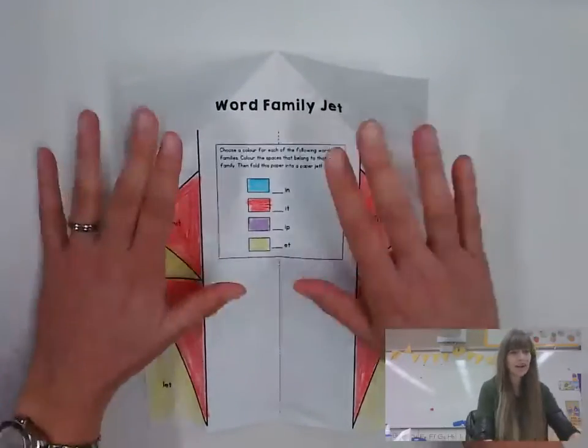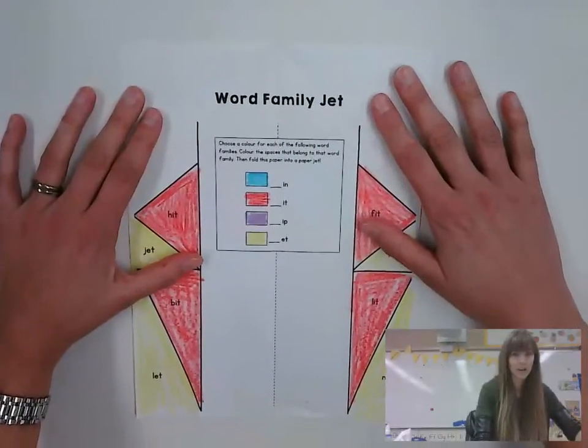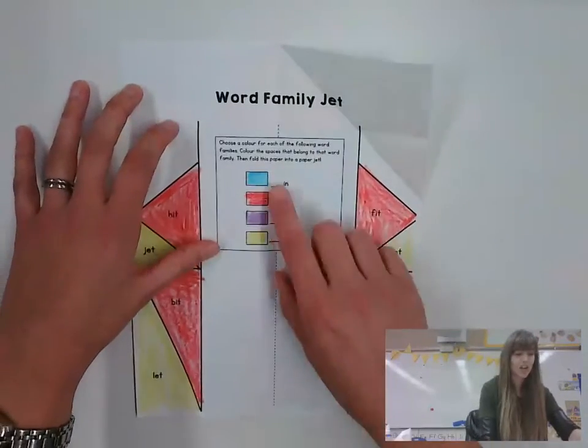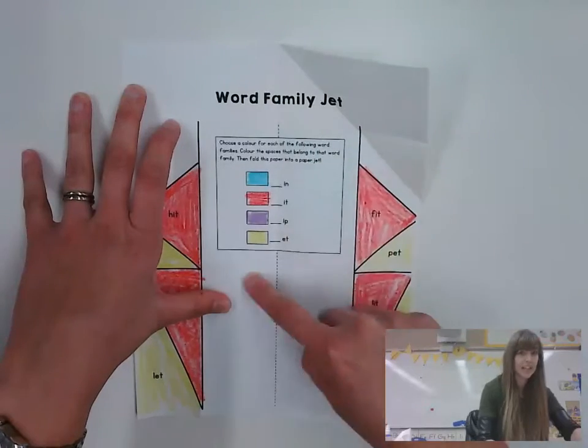then you're going to grab this paper out. It's called Word Family Jet. And first you're going to color in all the different word families. Just follow the instructions right here.